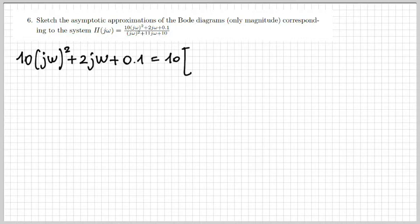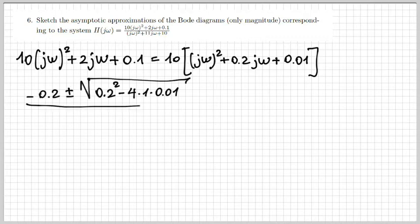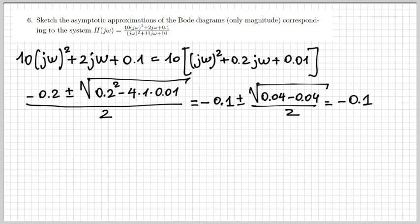To begin with, we find it convenient to decompose the second order polynomials, both the numerator and denominator, in terms of products of first order terms. Let's start with the numerator. We write it by taking out the factor 10. If we find the roots of the polynomial in square brackets, both roots are identical and equal to minus 0.1. So we can write it as 10 times (jω + 0.1) squared.